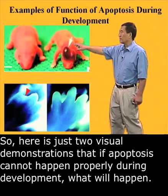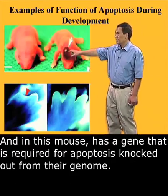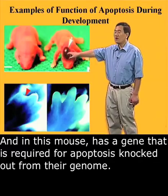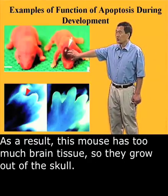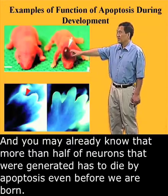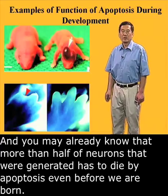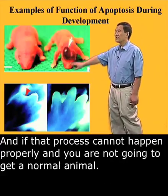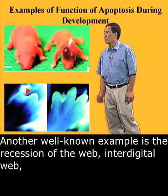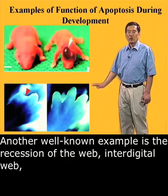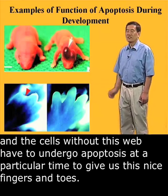Here are two visual demonstrations of what happens if apoptosis cannot occur properly during development. This mouse has a gene required for apoptosis knocked out from its genome. As a result, this mouse has too much brain tissue that grows out of the skull. You may already know that more than half of neurons ever generated have to die by apoptosis even before we are born. Another well-known example is the recession of the inter-digital web — the cells making up this web have to undergo apoptosis at a particular time during development to give us normal fingers and toes.